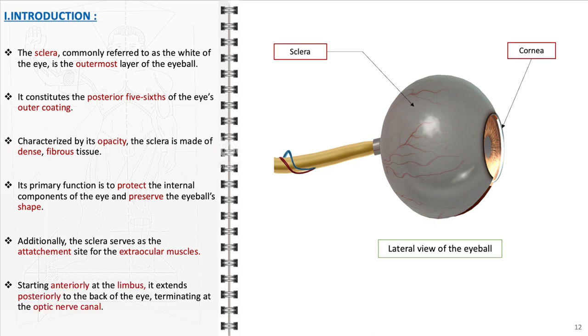The sclera begins anteriorly at the limbus, the junction where the cornea meets the sclera, and extends posteriorly, terminating at the optic nerve canal at the back of the eye. This comprehensive coverage is indispensable for the overall structural integrity and functionality of the eye, playing a key role in vision and ocular health.